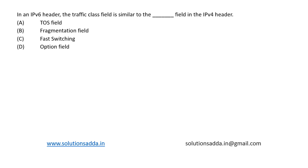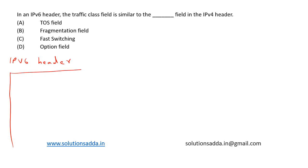This is a question from computer networks: in an IPv6 header, the traffic class field is similar to which field in the IPv4 header? Let's draw the IPv6 header as well as the IPv4 header to compare.